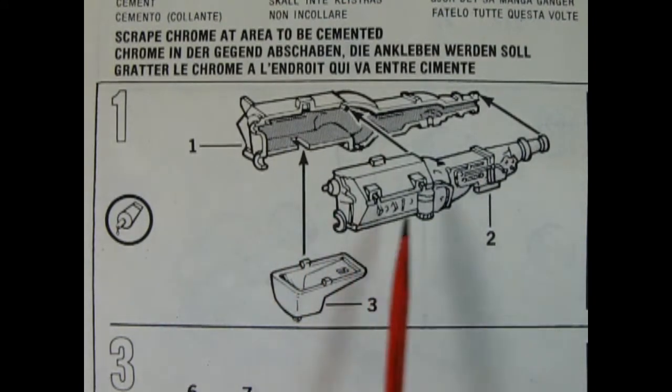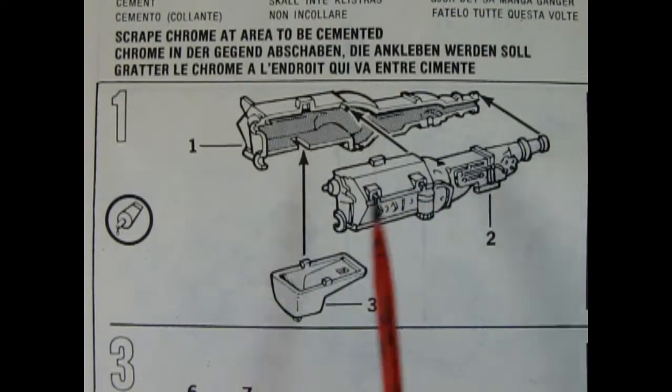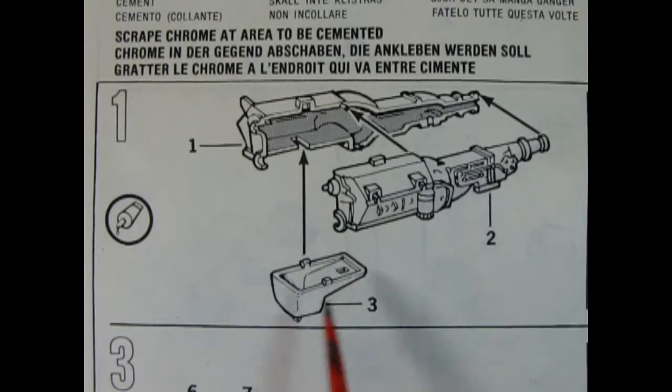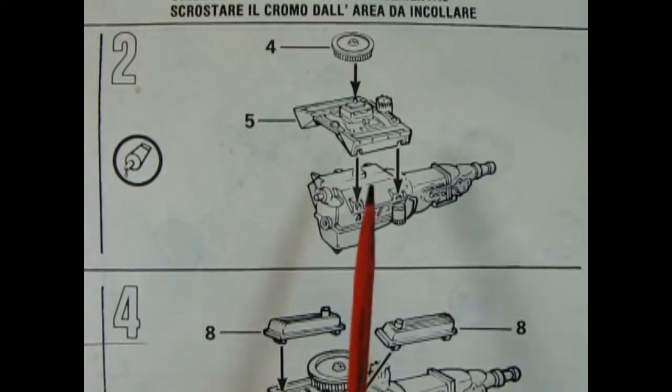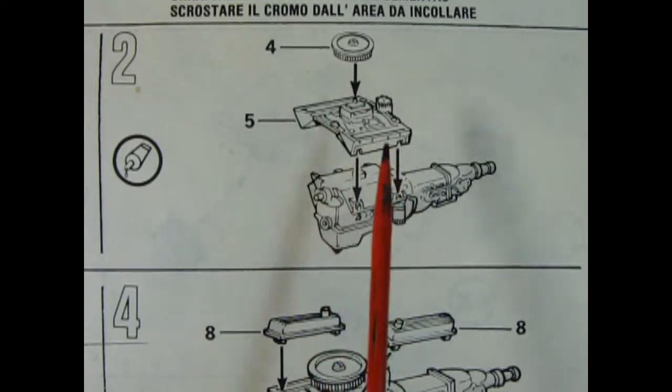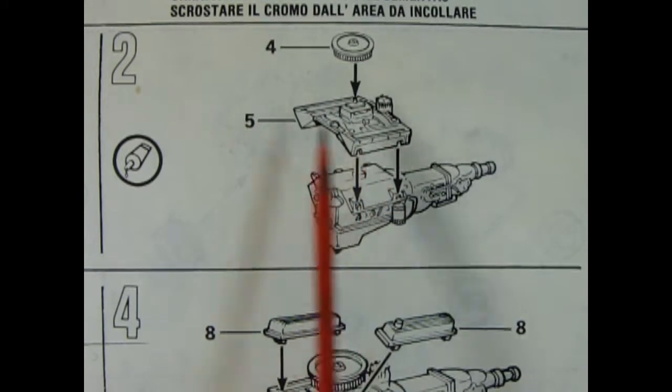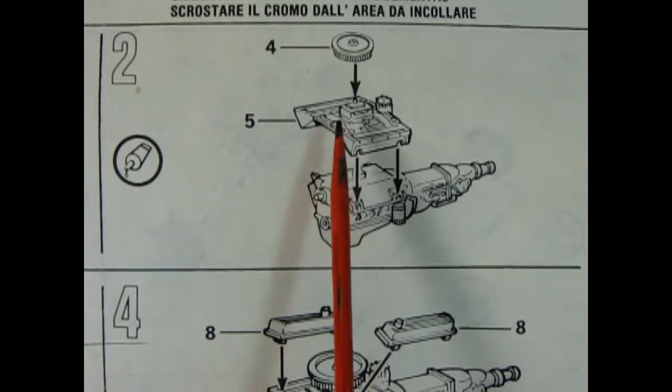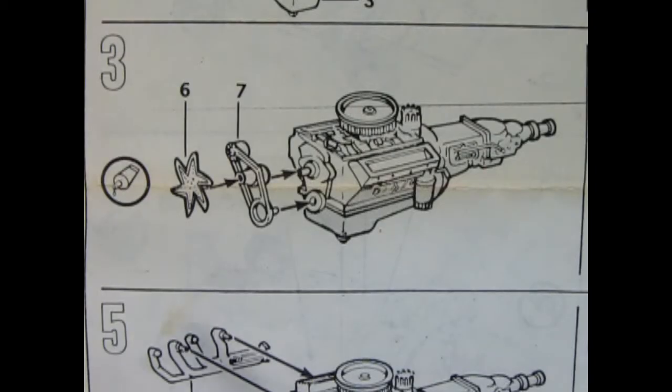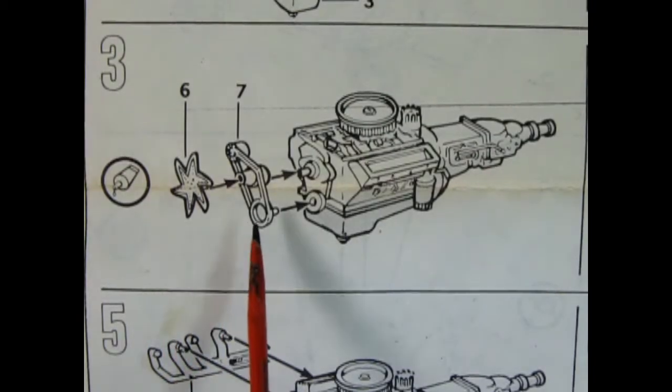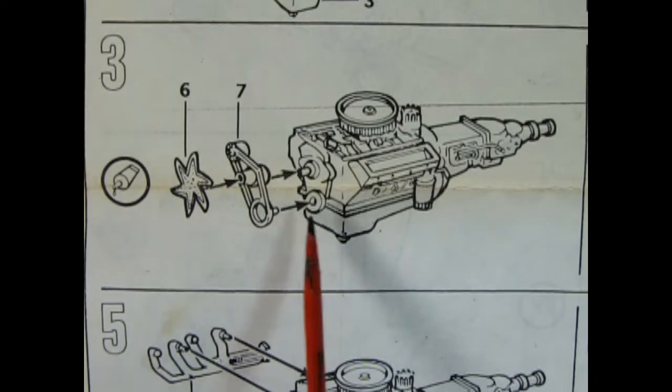Step one: we've got a two-piece engine block with transmission molded in place that gets glued together and then hooked up to our oil pan down below. Step two shows our manifold dropping in place with the air cleaner. This again is like those Johan kits with our cylinder heads, intake manifold, carburetor, and distributor all molded as one piece dropping onto an engine block.